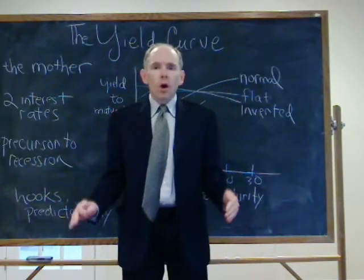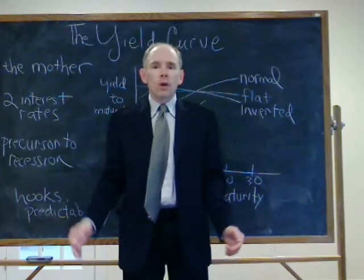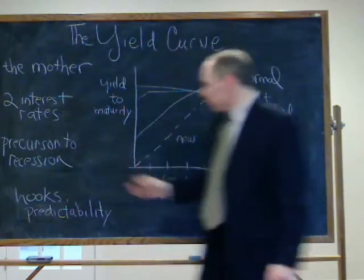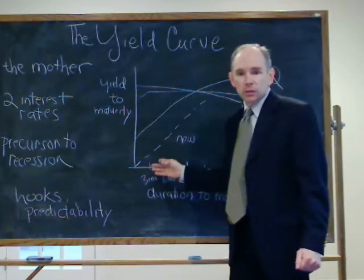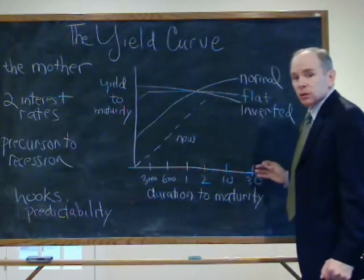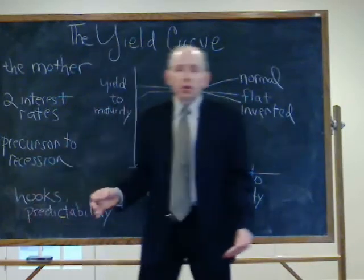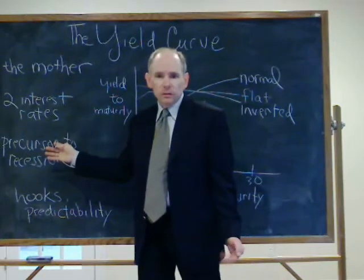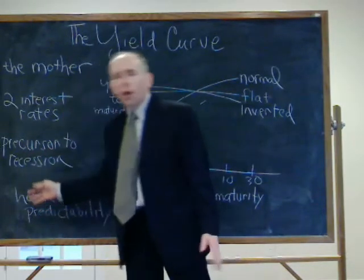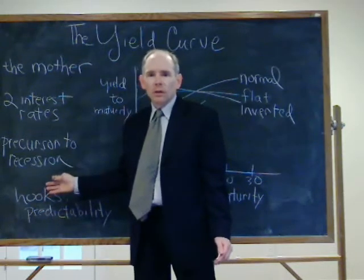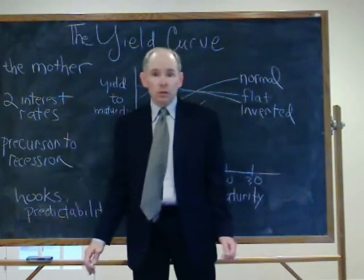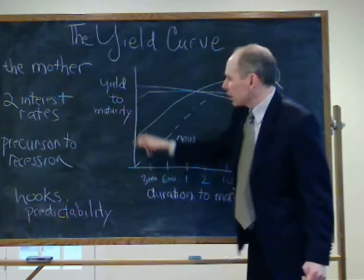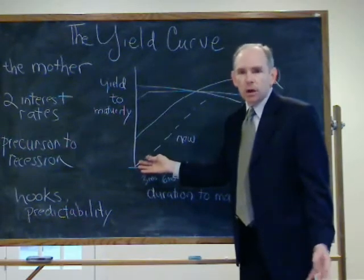Perhaps the mother of all macro, monetary, and financial models is the yield curve. The yield curve is, in a sense, just two interest rates — an interest rate for short-term debt (3 months, 6 months) and an interest rate for long-term debt, and the relationship between those two. When the yield curve takes a certain shape — when it becomes inverted — it is usually supposed to be a precursor to a recession. I think the theoretical hooks underlying the yield curve are very dubious, and the predictability of the yield curve is pretty dubious also.